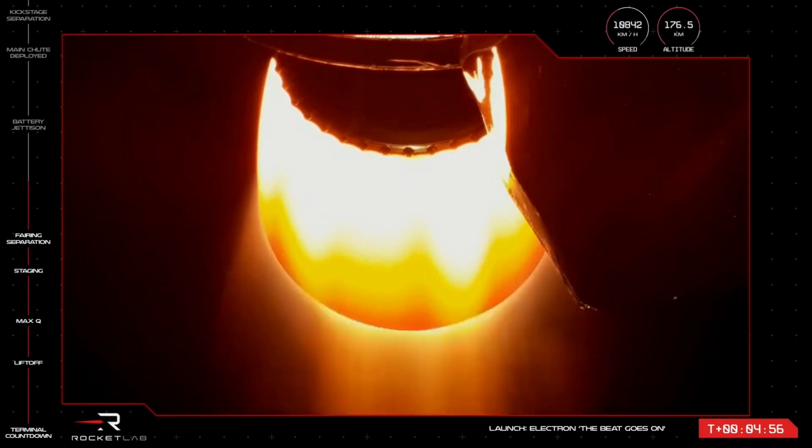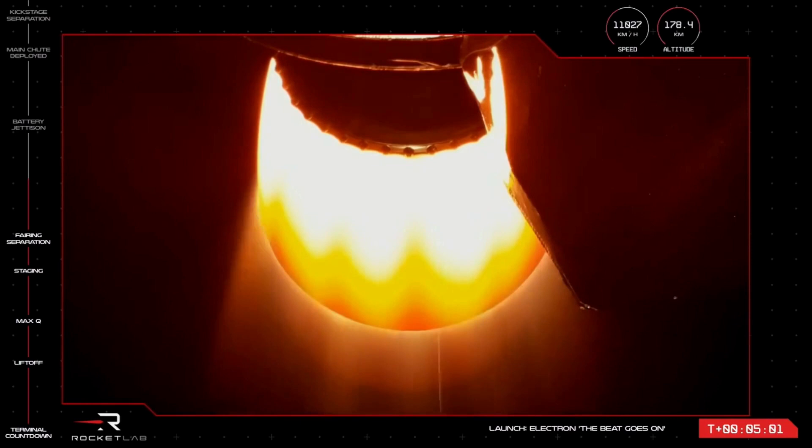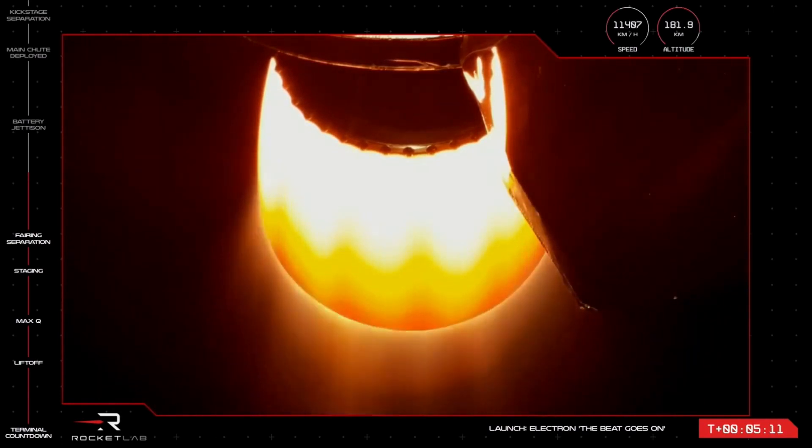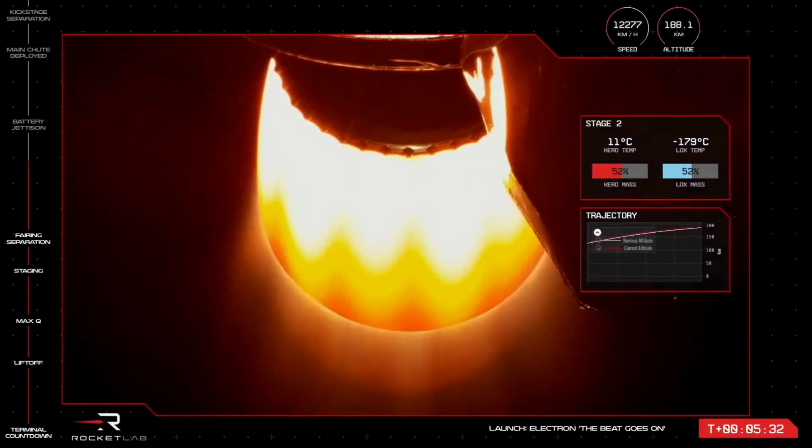Stage 2 propulsion holding nominal. At over 11,000 kilometres an hour and more than 180 kilometres in the air, this first launch from LC-1 this year is going fantastic so far, after two back-to-back launches from LC-2 that started 2023 for Electron. That second LC-2 mission actually flew just last week, so launching today marks the fastest we have ever turned around two missions. Our previous record was 15 days in 2022 between Capstone and a mission for the NRO.